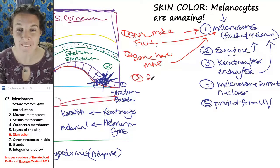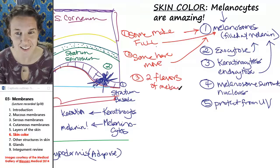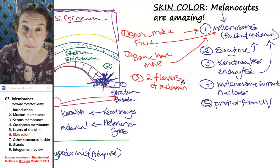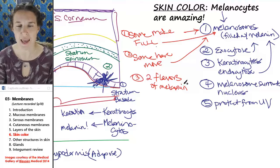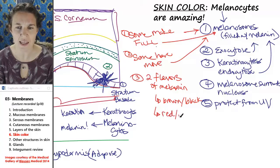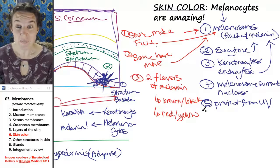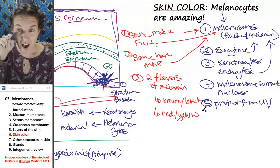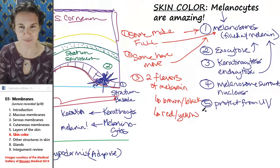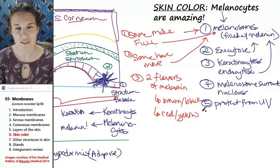There's one more — there are two flavors of melanin. Some melanocytes produce a brown-black form of melanin, and other melanocytes produce a red-yellow form of melanin. You can imagine that if you do a mix and match of those three variables, you can end up with an incredible diversity of skin color.